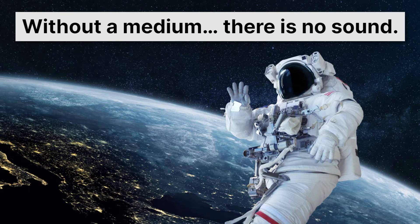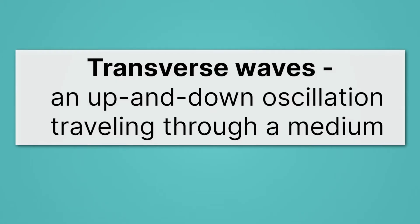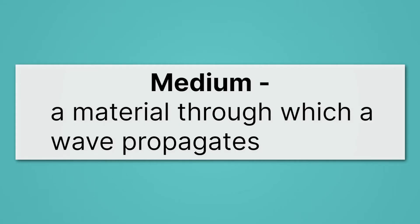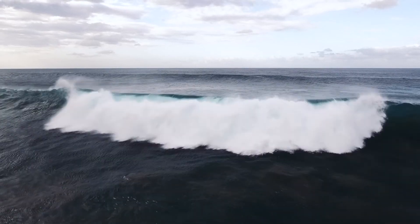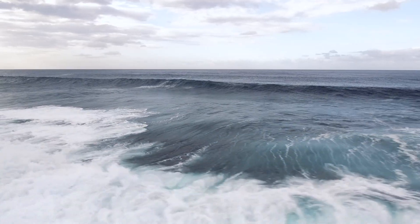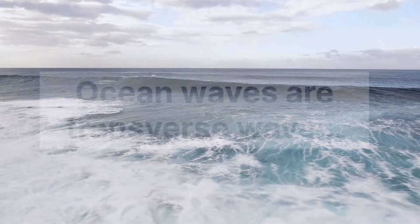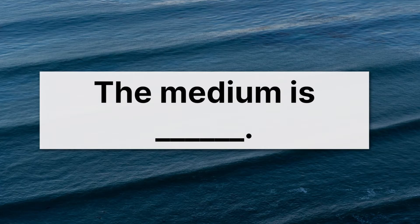Now let's introduce transverse waves. Here we have another spring, or maybe a slinky, and notice the person's hand is, instead of going forwards and backwards, going up and down. That makes a transverse wave. When we look at the definition, we'll see it's an up and down oscillation traveling through a medium — and remember, a medium is just a material through which a wave propagates. These ocean waves are a good example of transverse waves. The water piles up into high, repeated peaks and troughs, and all the while they're moving forward towards the shore. So ocean waves are transverse waves. In this case, what's the medium? Well, you guessed it — the medium is water.